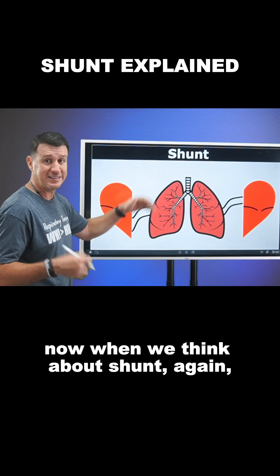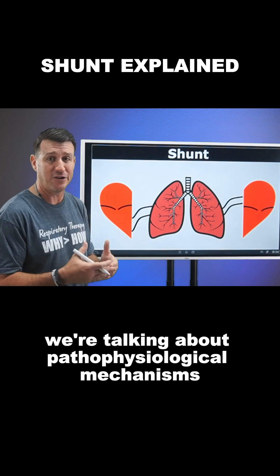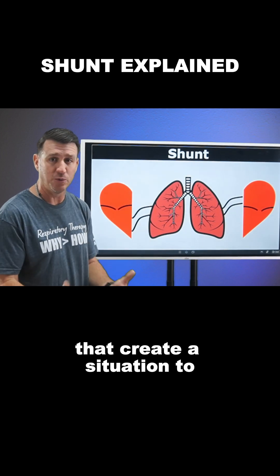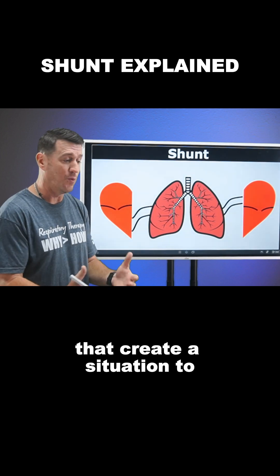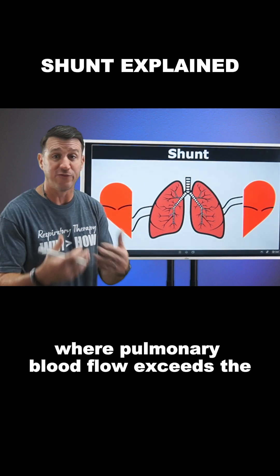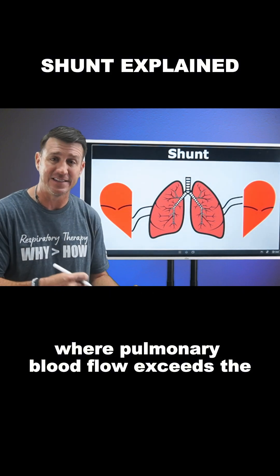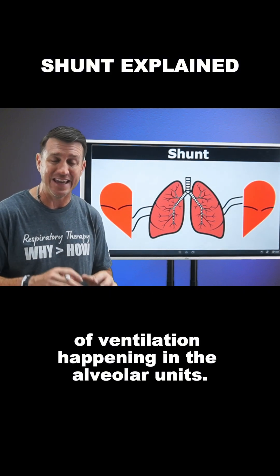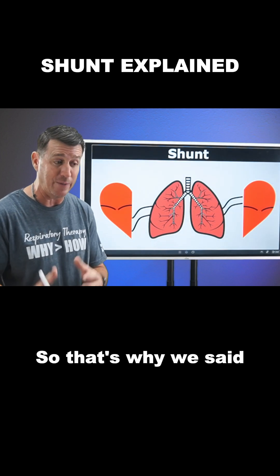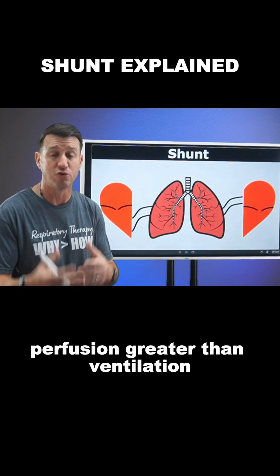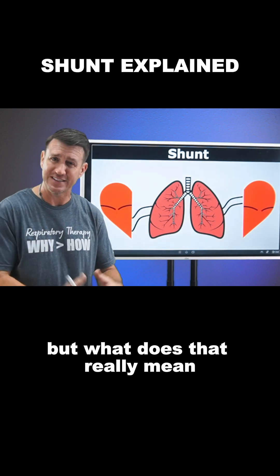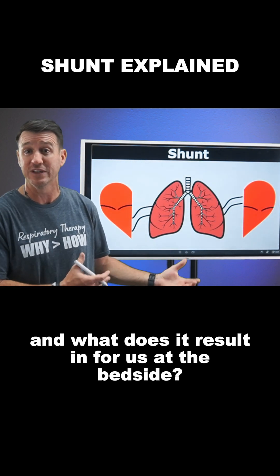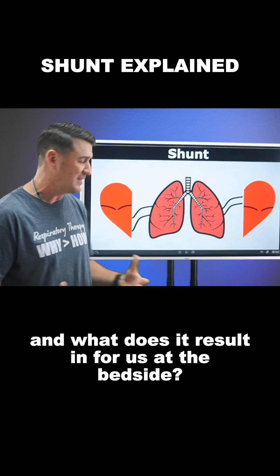When we think about shunt, we're talking about pathophysiological mechanisms that create a situation where pulmonary blood flow exceeds the ventilation happening in the alveolar units. That's why we say perfusion greater than ventilation — but what does that really mean, and what does it result in for us at the bedside?